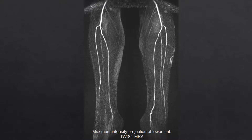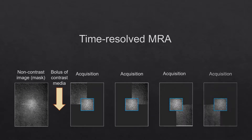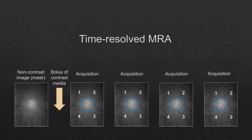Time-resolved MRA is a spoiled gradient echo sequence that uses multiple acceleration techniques including view-sharing. View-sharing involves filling the center of k-space over a short period of time and under-filling the rest. The missing data from the periphery of k-space is filled from the time points at either side to gather enough data to reconstruct a full image. The center of k-space is filled during each acquisition, while the periphery is partially filled and then stitched together to create the full image.